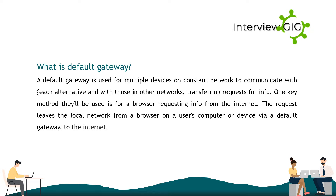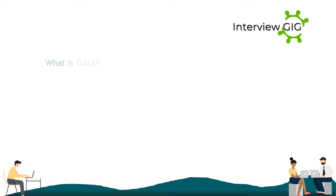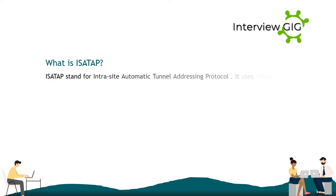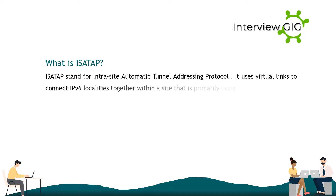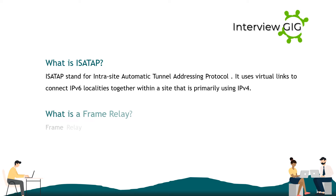What is ISATAP? ISATAP stands for Intra-Site Automatic Tunnel Addressing Protocol. It uses virtual links to connect IPv6 localities together within a site that is primarily using IPv4.